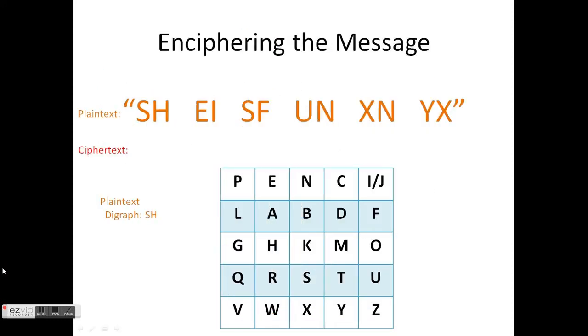So looking at our plaintext message from earlier, "She is funny," we first look at the digraph SH. Highlight the S and highlight the H. They are not in the same row or column, so draw a box around it. And the S will become R, and the H will become K. So the plaintext digraph SH becomes RK.